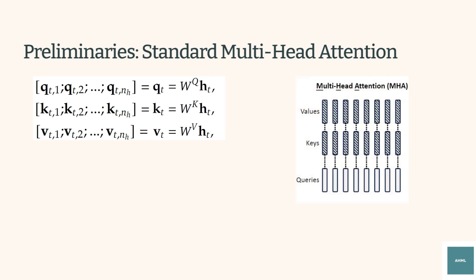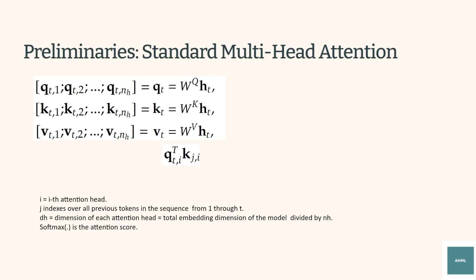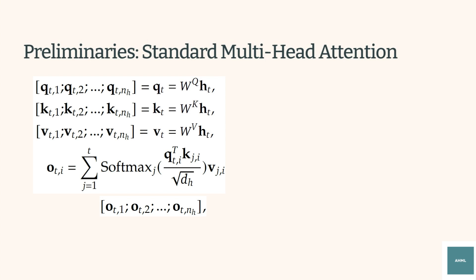Each head processes a smaller dimensional representation of the original vector in parallel, allowing the model to focus on different aspects of the input sequences. Each attention head then computes attention scores. The dot product similarity computes how similar the query at token T is to the key at token J. Division by the square root of DH normalizes values to stabilize training. Softmax normalizes attention scores across all previous tokens from 1 to the current token T, ensuring they sum to 1. The attention scores weigh the corresponding values, giving a new representation output for each attention head. The outputs from all attention heads are concatenated back into a single vector, and a weight matrix WO projects the concatenated vector back to the original embedding dimension, ensuring multi-head attention outputs a vector of the same dimension as the input.